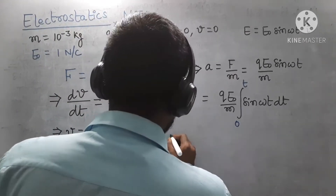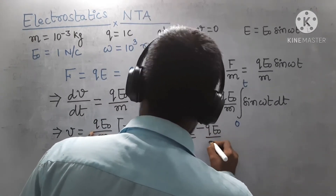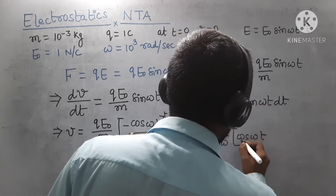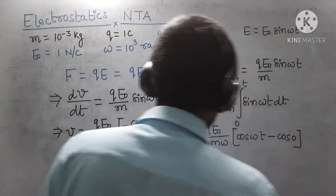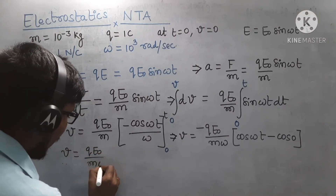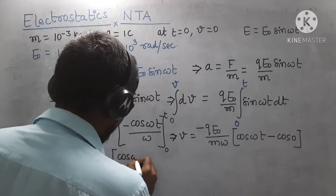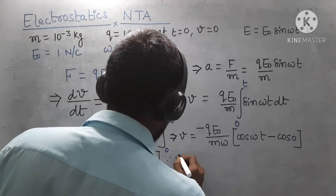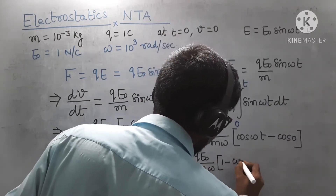Applying the limits, we get v = −(QE₀/mω)[cos(ωt) − cos(0)]. Since cos(0) = 1, this simplifies to v = −(QE₀/mω)(cos(ωt) − 1). Bringing the minus sign inside, we finally write v = (QE₀/mω)(1 − cos(ωt)).